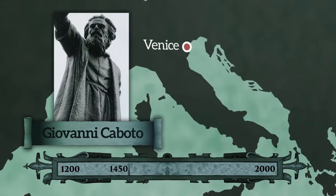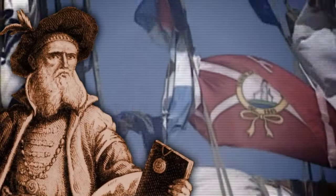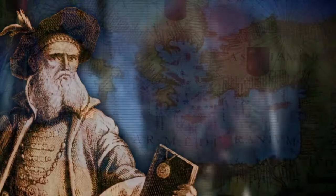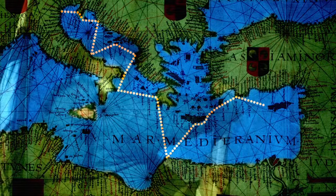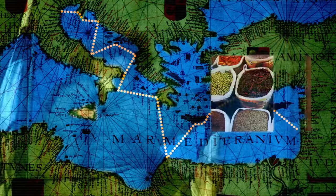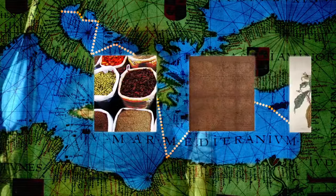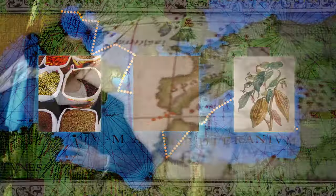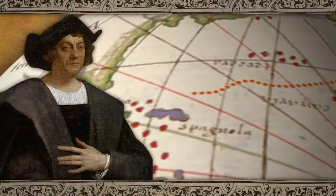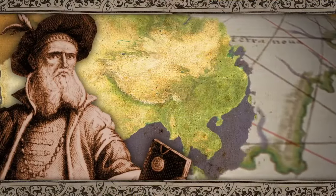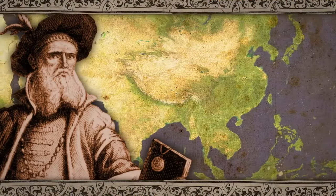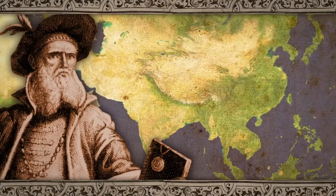Born in Venice around 1450, Giovanni Cabotto learned to navigate the seas while working for a Venetian trading company. He honed his skills sailing far across the Mediterranean Sea to reach its eastern ports, where the rich spices and silks of Asia were available for purchase. After Columbus' voyage to the West Indies, Cabotto decided that he too would try to find a westerly route to Asia, believing, like Columbus, that the lands across the Atlantic Ocean were part of Asia.